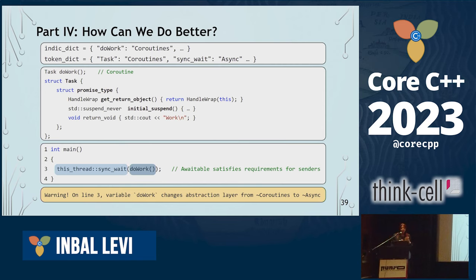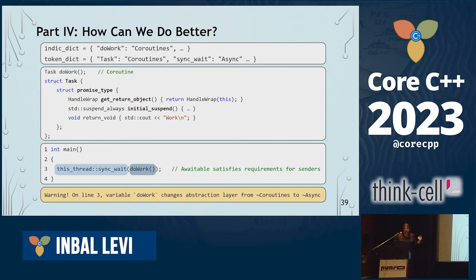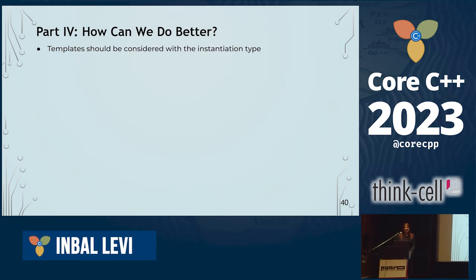I talked with the authors of sender-receivers and asked: is there a limitation on the coroutine, something you need to do differently to push it into a different framework? The answer was yes — you need to avoid the policy of suspend_never and use suspend_always, because otherwise the freezing of the operation doesn't work well, and we have problems with error handling. I think this really says a lot about what I'm trying to talk about: when we try to use one framework combined with another, we need to be very aware that we're using things from different worlds.